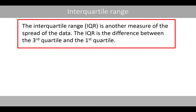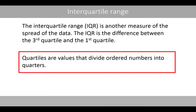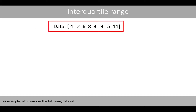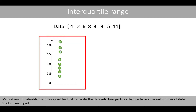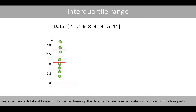The interquartile range is another measure of the spread of the data. It is the difference between the third quartile and the first quartile. Quartiles are values that divide ordered numbers into quarters. For example, consider the following data set. By plotting the data, we can easily see the order of the data points. We first need to identify the three quartiles that separate the data into four parts with an equal number of data points in each. Since we have eight data points in total, we have two data points in each of the four parts.